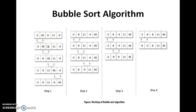The bubble sort algorithm will consider the first 2 numbers, compare them, and the one with the smallest number will be retained in the first position and the next in the second position. In this example, minus 2 and 45 are considered. Minus 2 is the smallest, so minus 2 will be retained in the first position and 45 in the second. In the next step, 45 and 0 are considered. Since 0 is the smallest, an interchange is required — 0 will be interchanged and 45 moved to the next location.